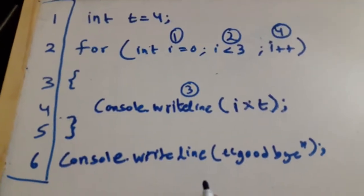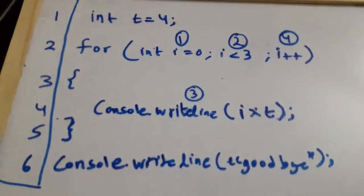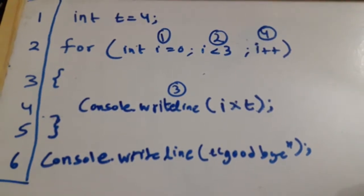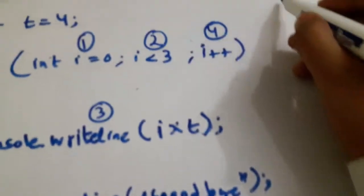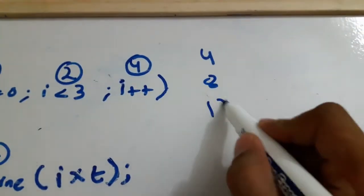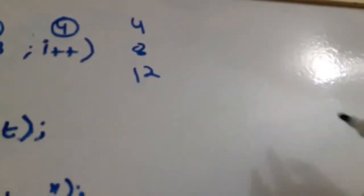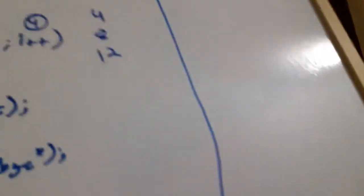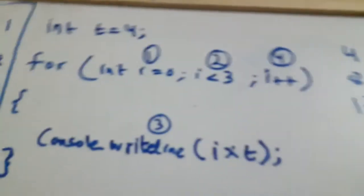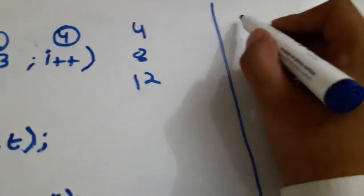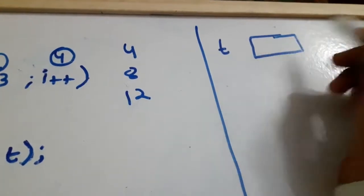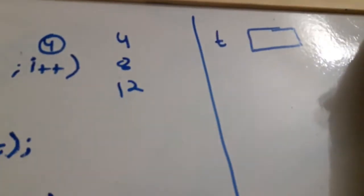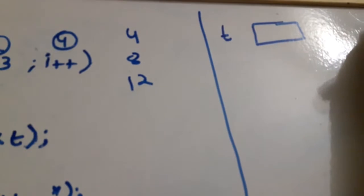Let's start with the first line. The first line is creating an integer named t and its value is equal to four. Let's execute this line in our memory diagram. The expected output of the program is four, eight, and twelve. In memory, there will be some block — as you know, an integer takes four bytes, or in some cases two bytes depending on the computer, but let's assume it's a four-byte memory location.